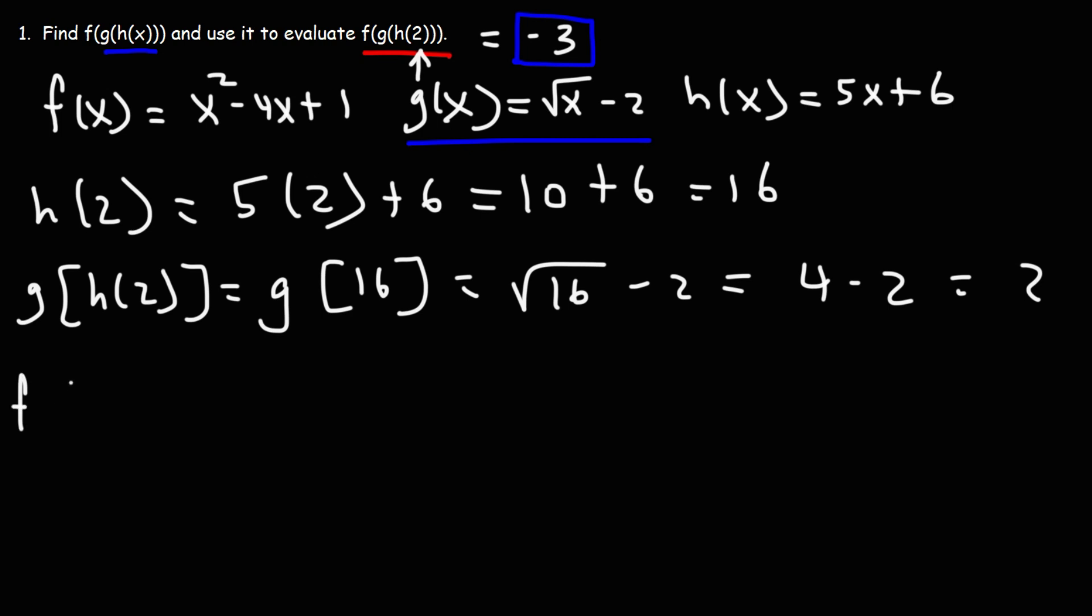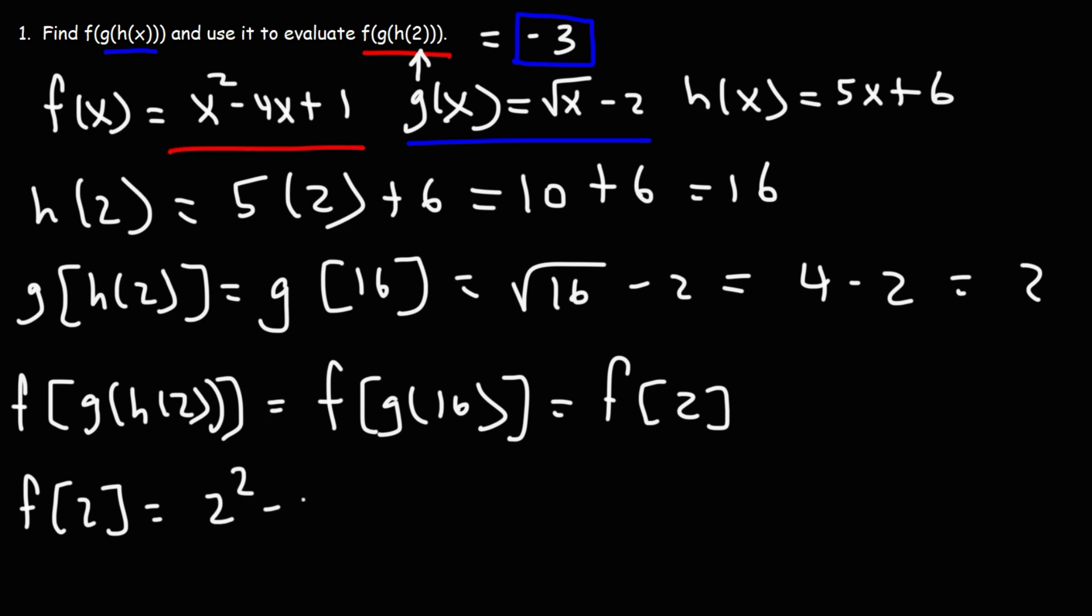And then we have f of g of h of 2. So h of 2 was 16. g of 16 is 2. So now we've got to find out what the value of f of 2 is. So now we can plug that into this formula. And it's going to be 2 squared minus 4 times 2 plus 1.